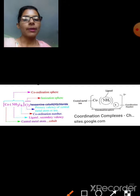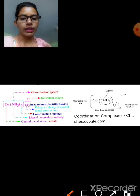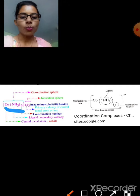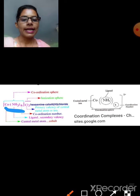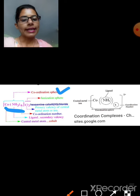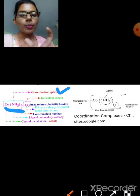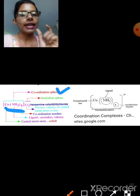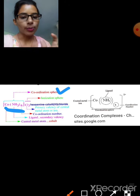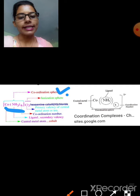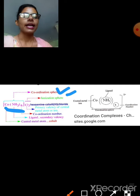Now let's look at the coordination sphere. The coordination sphere is the complete inner sphere — the central metal plus all directly attached ligands enclosed in brackets. This is called the coordination sphere. The outer part is called the ionization sphere, which consists of the ions outside the coordination sphere.